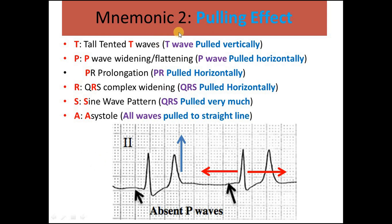There is also a second mnemonic called the pulling effect. In hyperkalemia, the T wave is pulled vertically, so it looks pinched or has a tented appearance. However, the rest of the waves — including the P wave, PR interval, and QRS complex — are all pulled horizontally. This causes widening of the P wave, PR prolongation, widening of the QRS complex, a sine wave pattern, and finally asystole. If you remember that hyperkalemia causes a pulling effect, you can recall all the ECG changes.